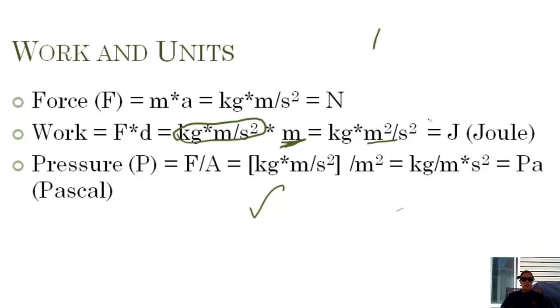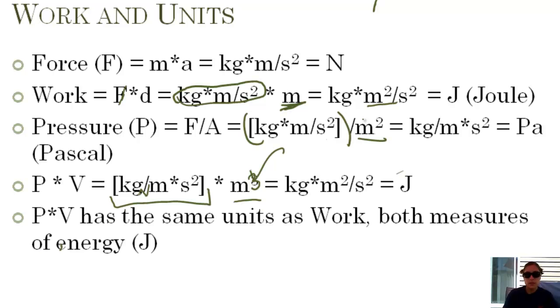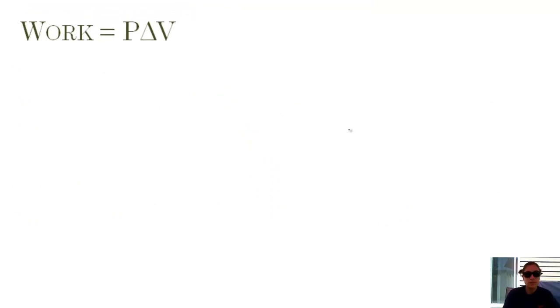Now let's find pressure. Pressure is force divided by area, which is meters squared. If we cancel some things out, we get a kilogram per meter second squared, which is a pascal, a unit for pressure. If we take our pressure times our volume, we get kilogram meter squared per second squared, which is also a joule. So work and pressure times volume are similar because they have similar units. They're both measures of energy because joules is a unit for energy.